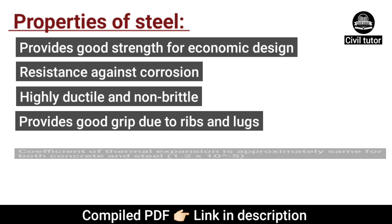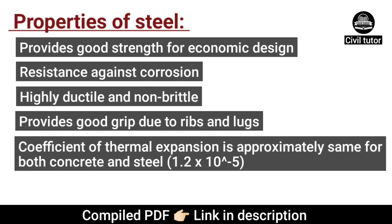The most important property is the coefficient of thermal expansion, which is approximately the same for both steel and concrete, that is 1.2 × 10⁻⁵ per degree centigrade. The coefficient of thermal expansion describes how the size of an object changes with the change in temperature. In simple words, with changes in temperature, both the concrete and steel would expand or contract by the same amount, which is not true for other metals.